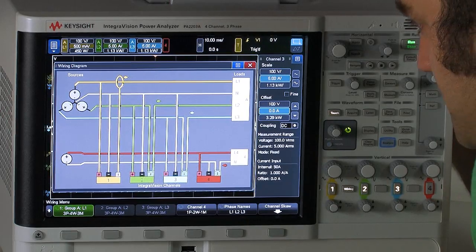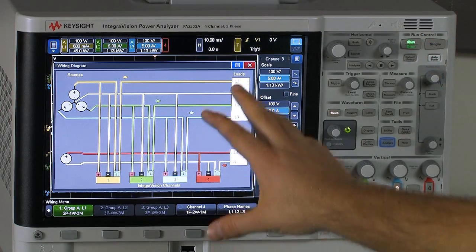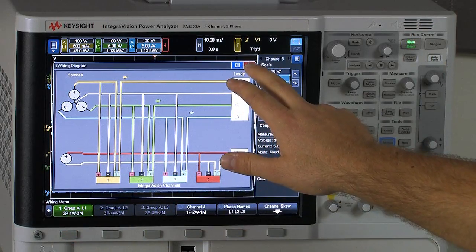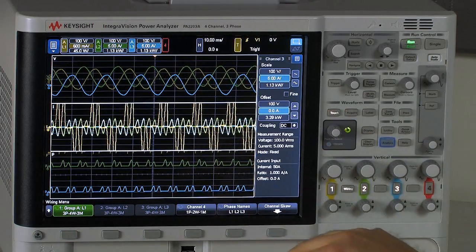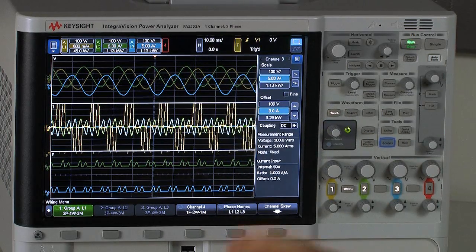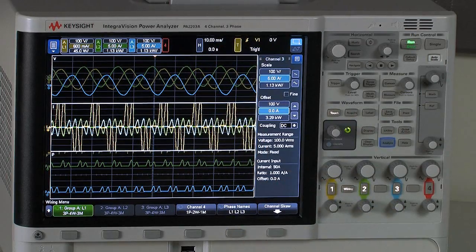So I'm just going to adjust the shutter here on the back of the instrument. And right now, so again, we have channels one, two, and three groups. I'm going to go ahead and close the wiring diagram. I have some simulated data up here on the screen. And what we're actually looking at is the input to a three-phase rectifier right now.